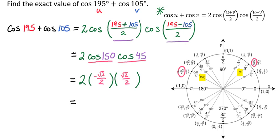From there, we can plug this into our calculator and we're going to get a value of negative radical 6 over 2. And that's our answer.